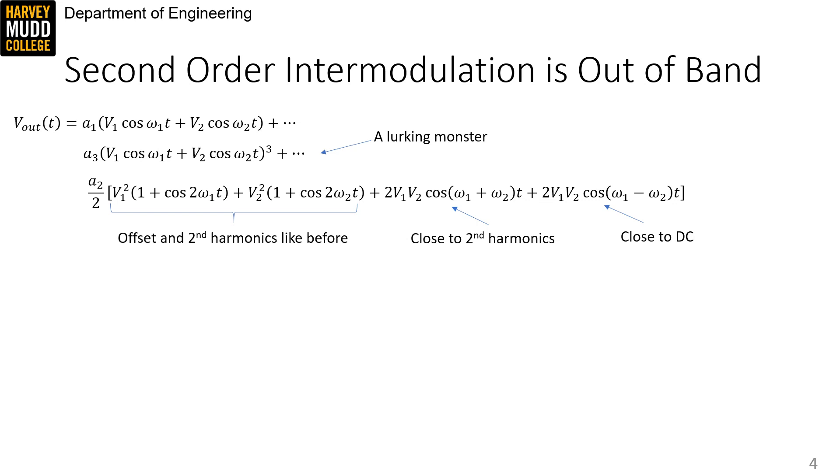One exception is that some receivers, called direct down conversion receivers, are very sensitive to signals near DC, and second-order intermodulation creates a signal near DC.